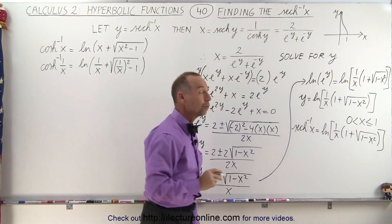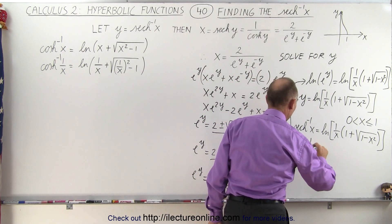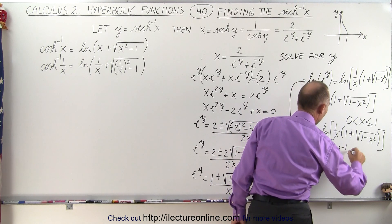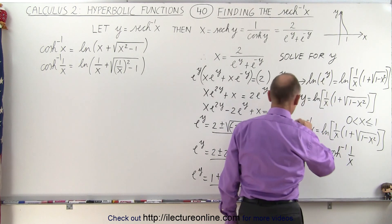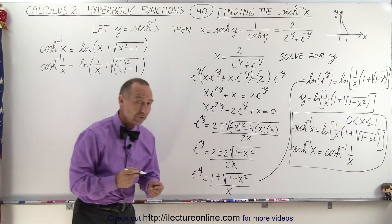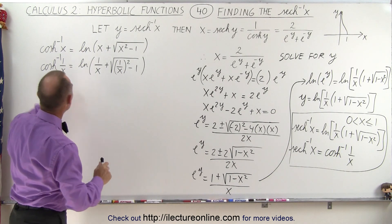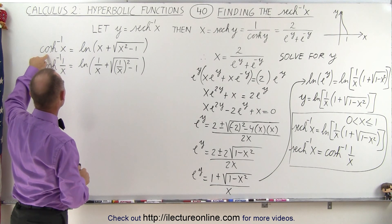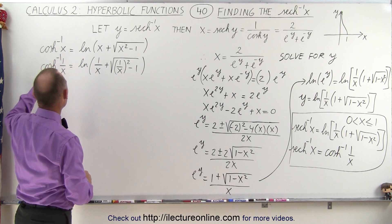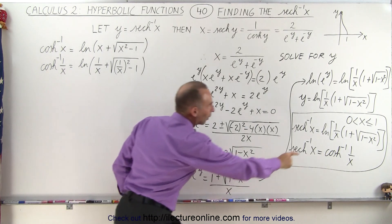Finally, the inverse hyperbolic secant of X can also be written as the inverse hyperbolic cosine of 1 over X. Both of these are good expressions for the inverse hyperbolic secant of X. To show that that's true, we use the expression for the inverse hyperbolic cosine of X. When we write the inverse hyperbolic cosine of 1 over X, we should get the same result as what we have.